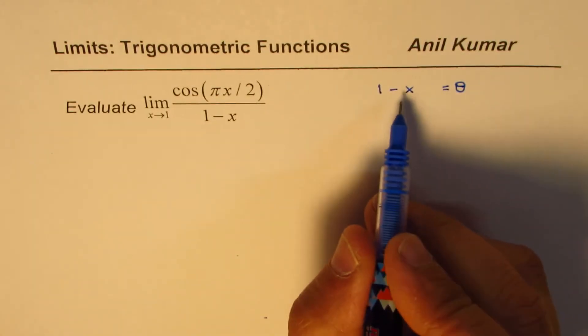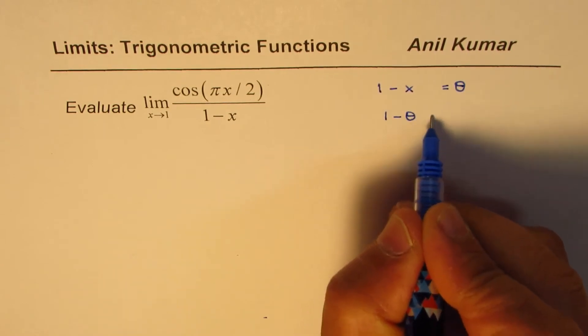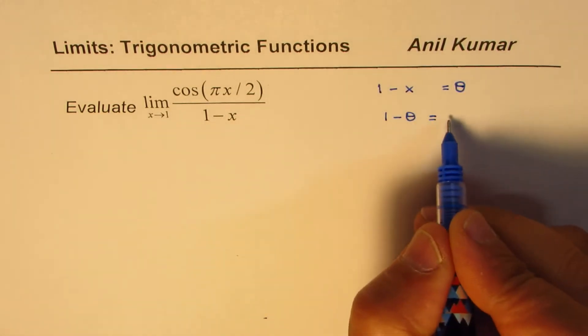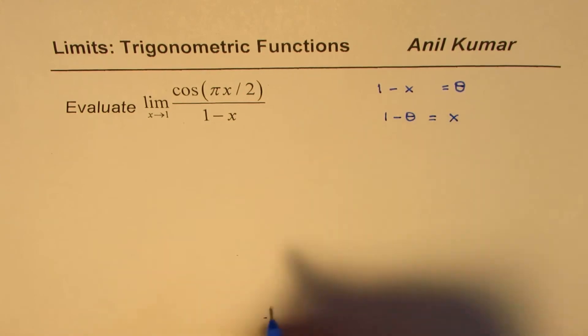So from here, we can write what x is equal to: 1 minus θ will be equal to x. So we can rearrange and write it like this.